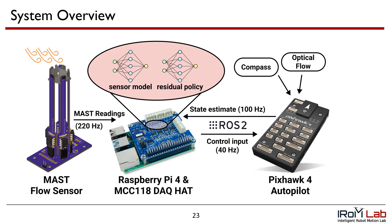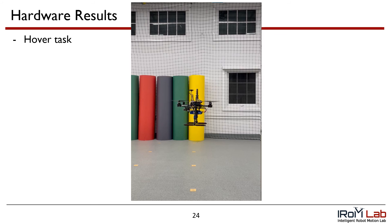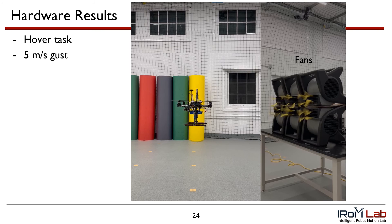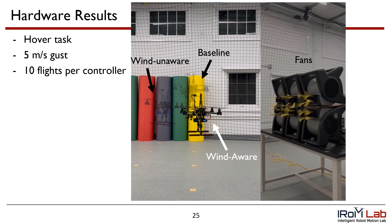Our controllers run on a Raspberry Pi companion computer, which takes in the MAST readings at 220 Hz and a state estimate at 100 Hz. The sensor model and residual policy output a control input to the PX4 Autopilot at 40 Hz, which handles the rate control and mixing. Our hardware experiment consisted of FlowDrone in hover, with a 5 meter per second gust generated by 6 high-power blower fans 4 meters away. We conducted 10 flights per controller.